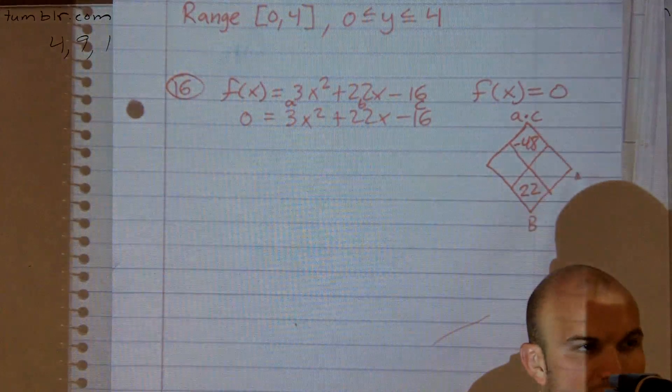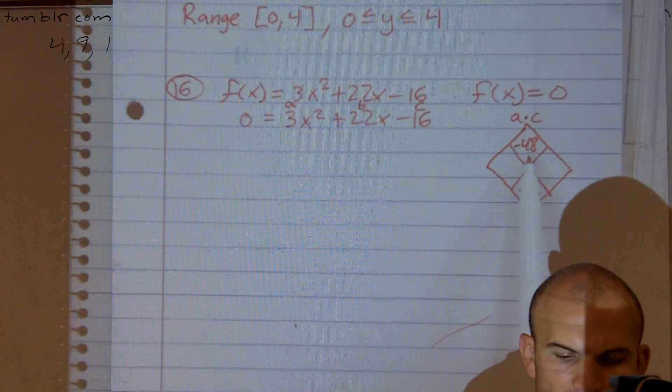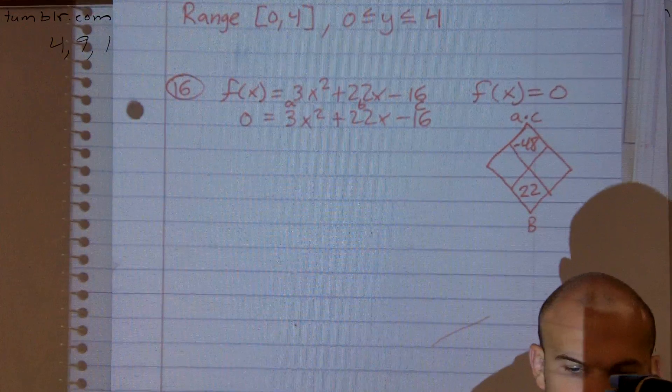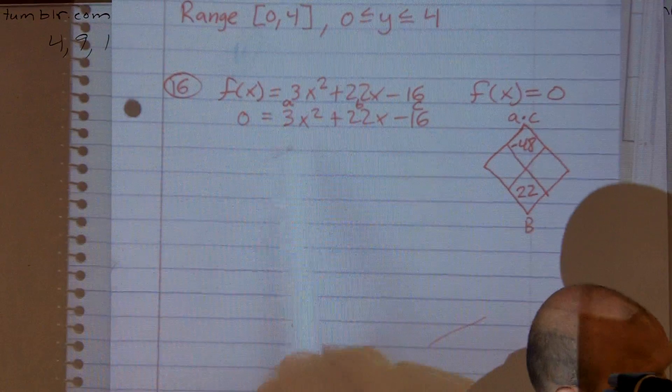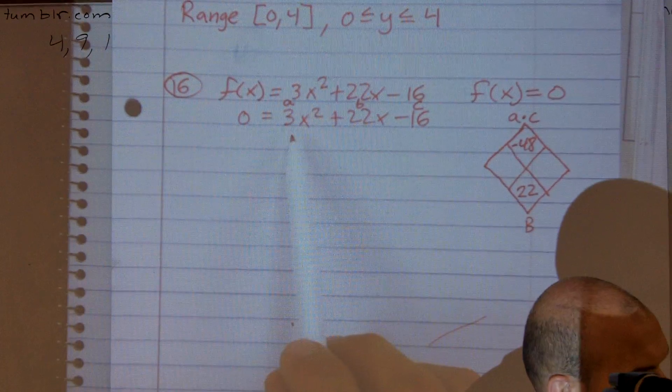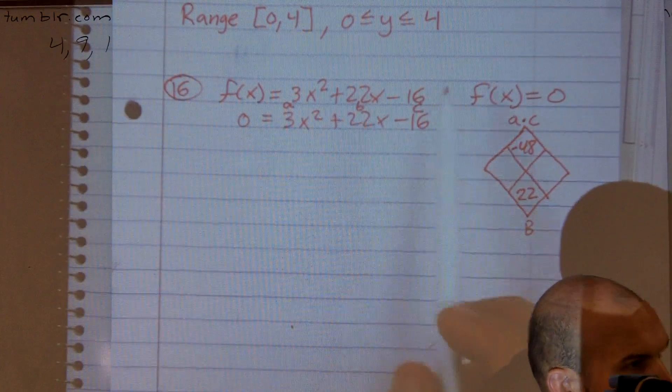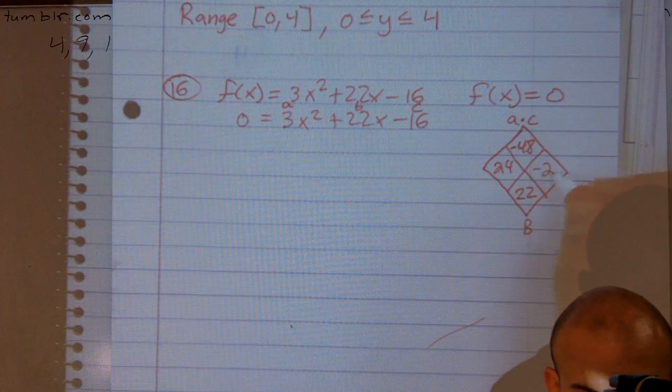I put b back down here as 22. So to solve, to figure out the rest of these boxes, what two numbers multiply to give you negative 48 but when you add them up they give you positive 22. And even when you're doing the diamond and there's no number in front, there's a 1 in front of there, you're still doing a times c because there's always 1 times your final number. So yes, it's going to be a positive 24 and a negative 2.